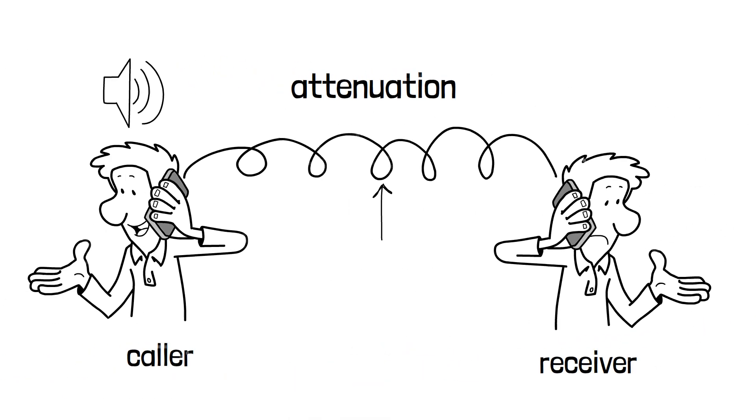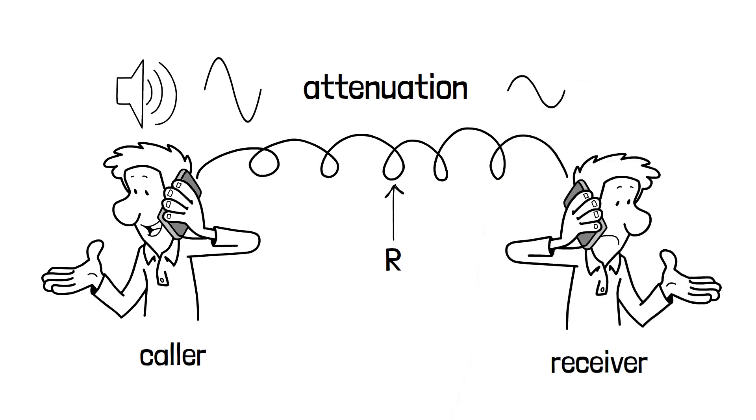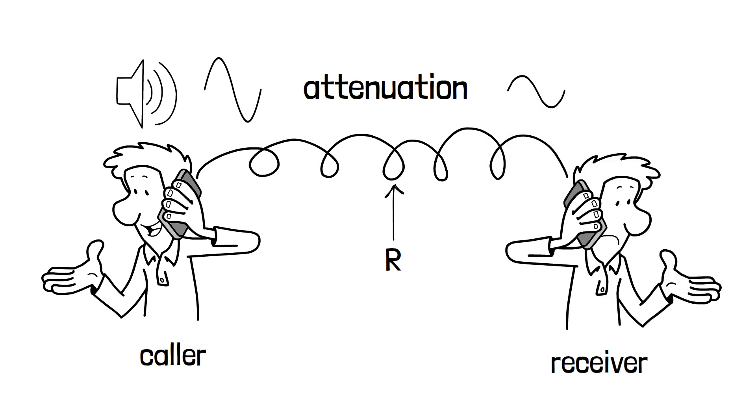Similarly when the signal travels through the transmission medium, it experiences some resistance. The signal loses some of its energy to overcome the resistance. This loss of energy of a signal is called attenuation.